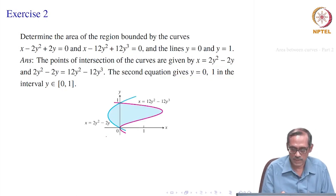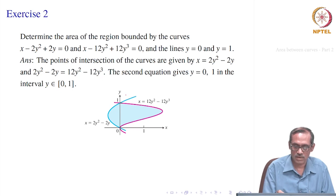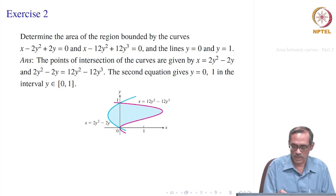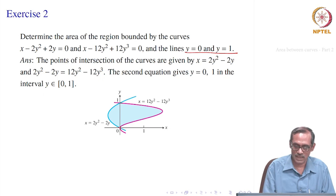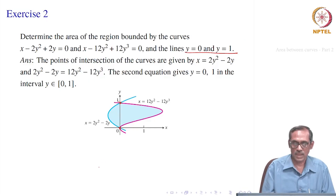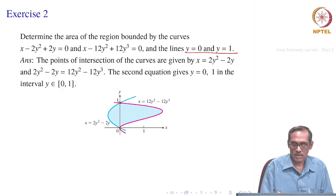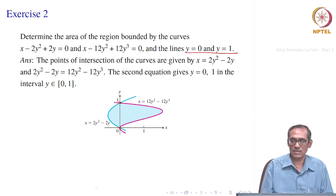If you plot them, x = 2y² - 2y is the curve on the left — the blue one — and the magenta one is x = 12y² - 12y³. We want to compute the area between them where y = 0 and y = 1 are exactly the points of intersection. We could have just asked to determine the area bounded by these two curves in the upper half plane.